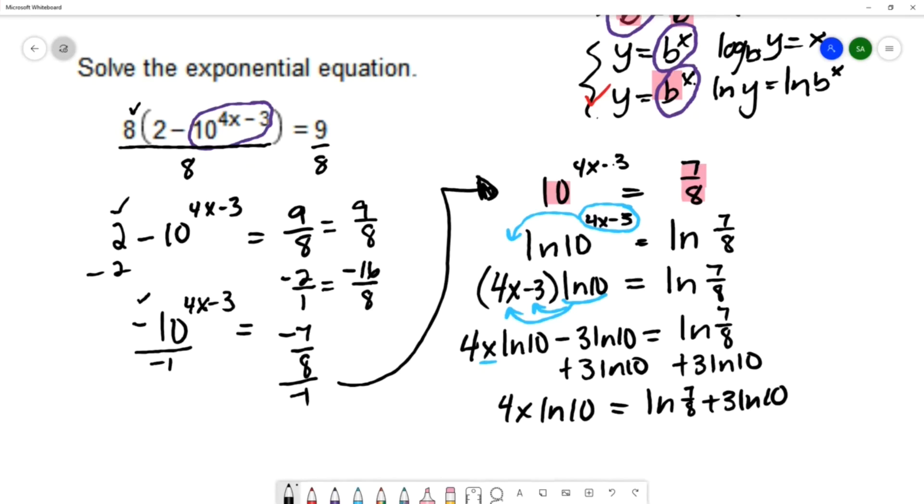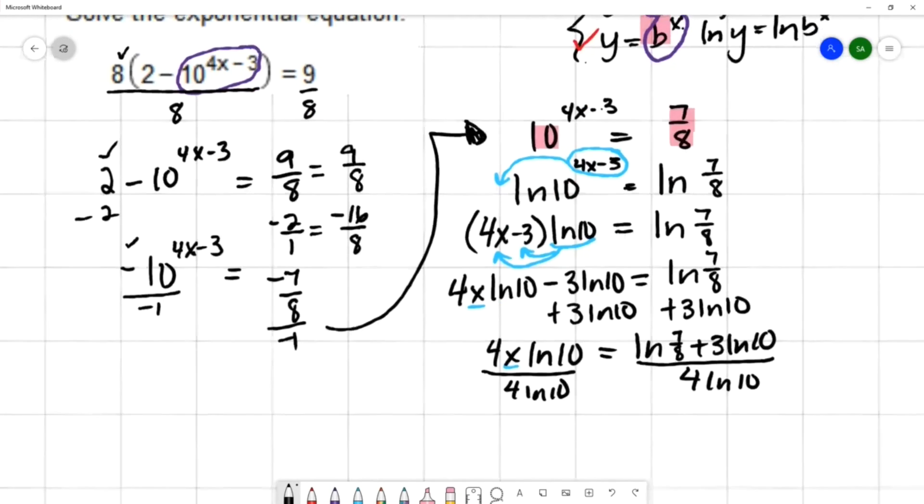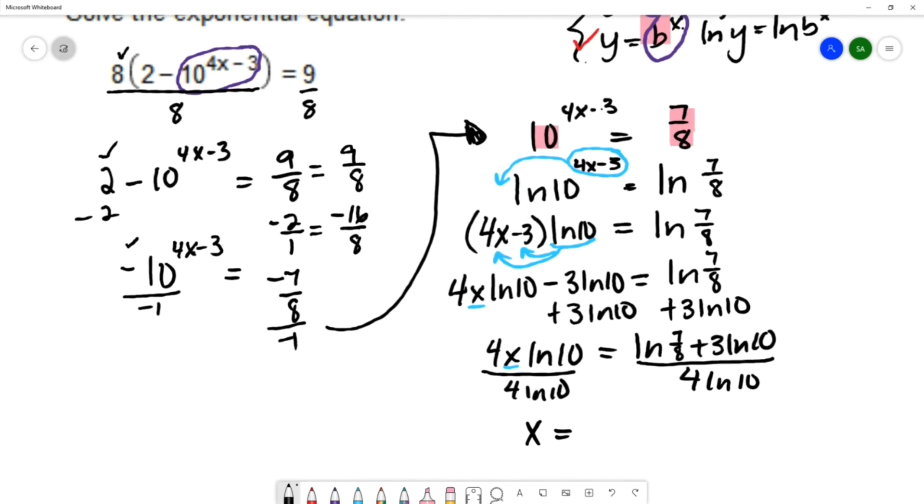That's 4x natural log 10 equals natural log 7 eighths plus 3 natural log 10. Now I can isolate x by dividing by 4 natural log 10. So x equals natural log 7 eighths plus 3 natural log 10 over 4 natural log 10.